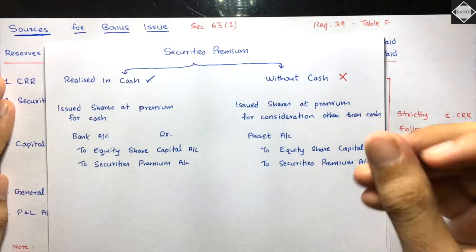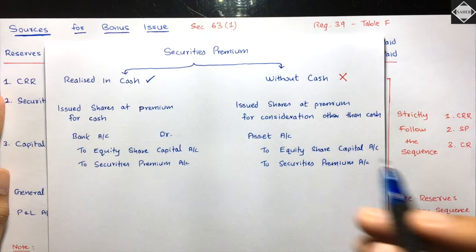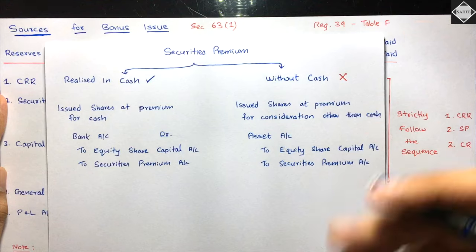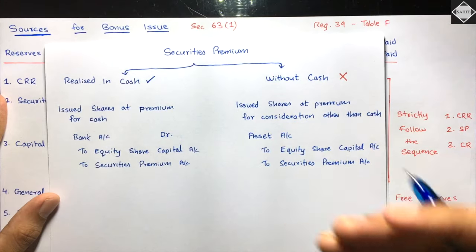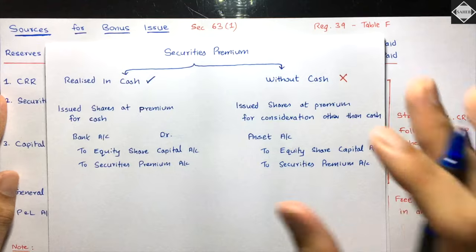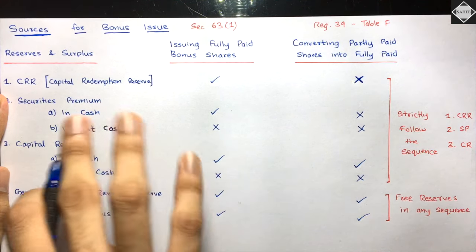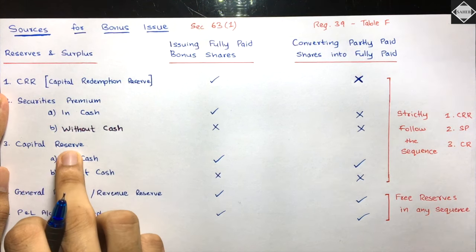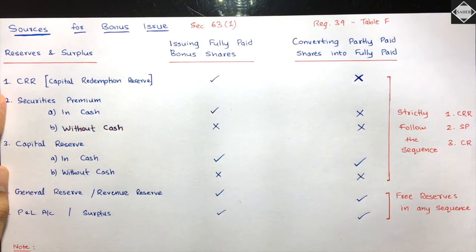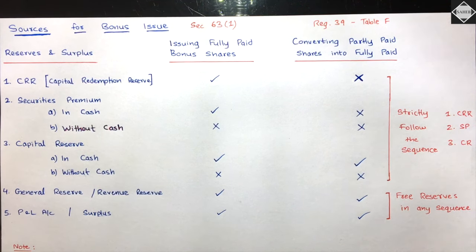For Securities Premium, there is a restriction: you can only use securities premium realized in cash. If you issued shares at a premium and received cash in the bank, that securities premium is realized in cash and can be used. But if shares were issued at a premium for consideration other than cash - like machinery or land - that securities premium cannot be utilized for bonus issue.